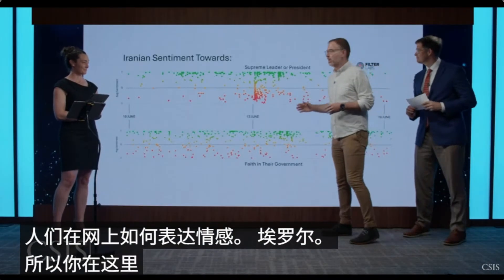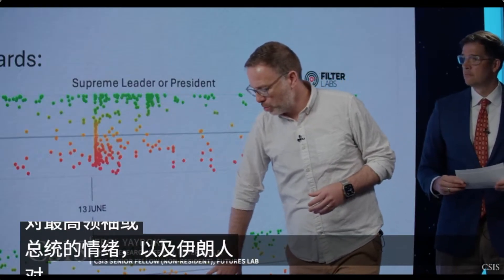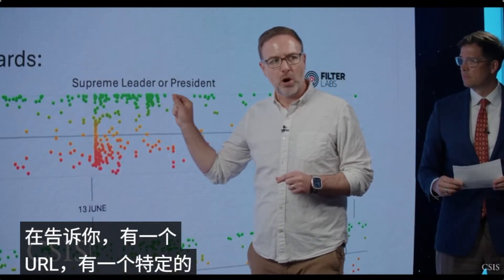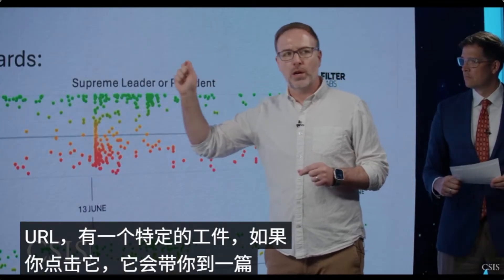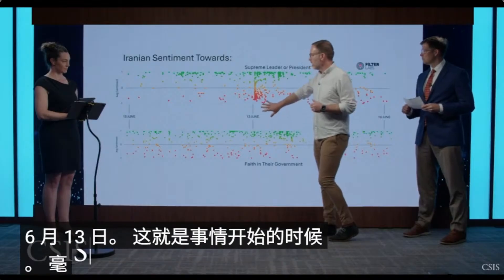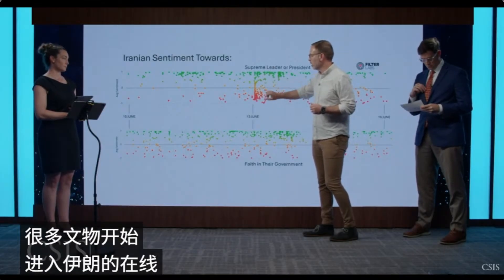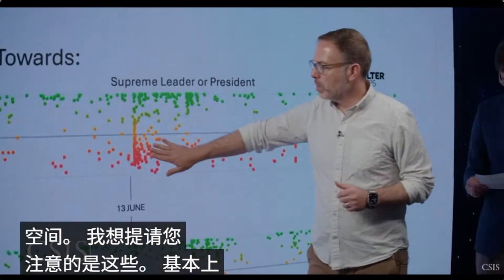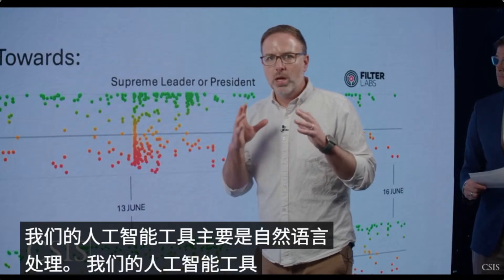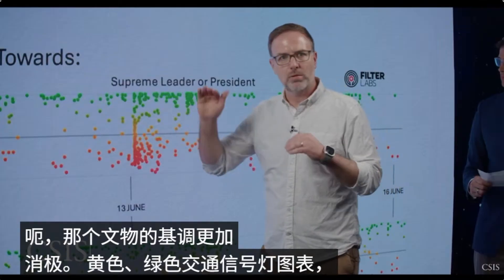What you're seeing here is a chart that shows Iranian sentiment towards the supreme leader or the president, and Iranian sentiment towards faith and government. Each one of these points represents a URL — a specific artifact that, if you click on it, will take you to an Iranian news article or a Telegram post. This is June 13th, so this is when things kicked off. You see a lot of artifacts starting to come into the online Iranian space. The color coding is a stoplight chart — red means our AI tools, primarily natural language processing, think the tone of that artifact is more negative; green is more positive, red is more negative.